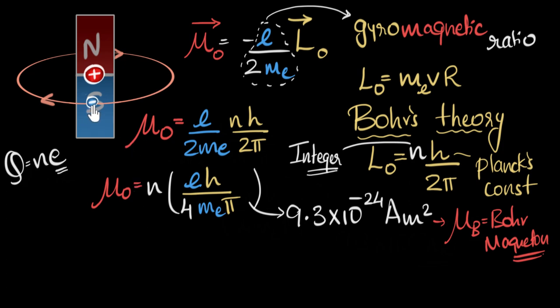But remember, this is only orbital magnetic moment. Similarly, we have spin magnetic moment. But the beautiful thing is it turns out that even spin magnetic moment for electrons happens to be pretty much one Bohr magneton. So if you calculate the spin magnetic moment of electrons, you get pretty much the same number, one Bohr magneton.